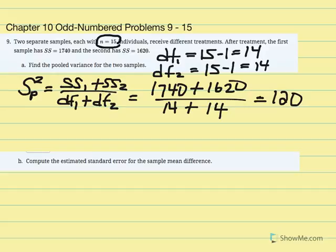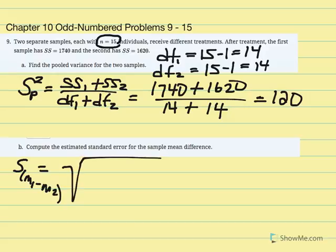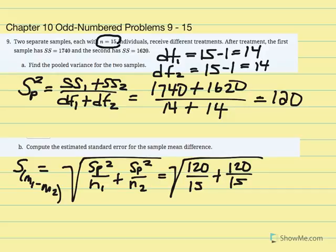Now we can move on to part B, which asks us to compute the estimated standard error of the sample mean difference. The formula is s sub M1 minus M2 equals the square root of pooled variance over N1 plus pooled variance over N2. Replacing variables: pooled variance equals 120, N1 equals 15, and N2 equals 15. In this case, just by coincidence, we have equal sample sizes — that isn't always the case, which is why it's necessary to calculate pooled variance.